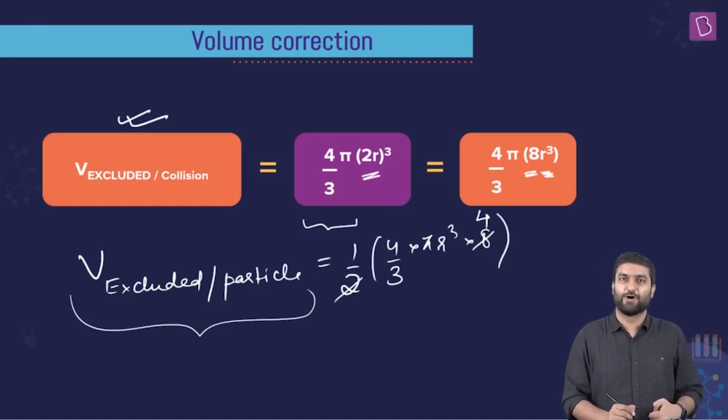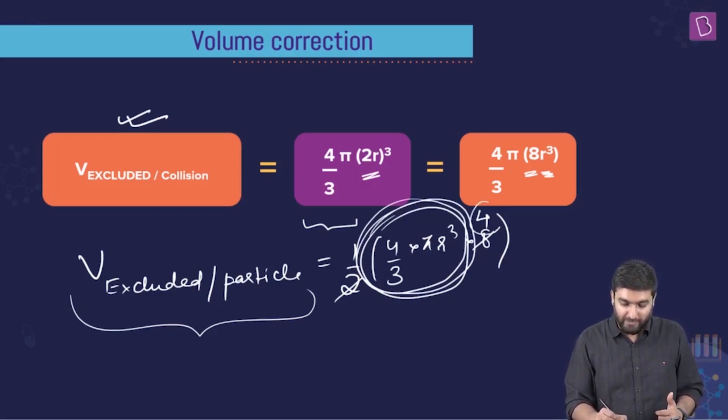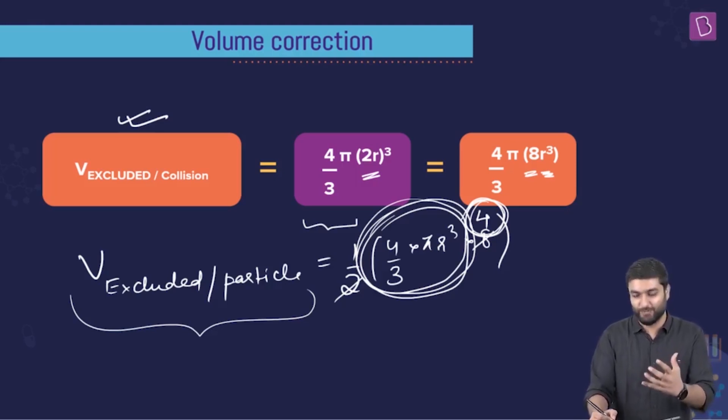Now think about it. We thought that the excluded volume would be the volume of the particles in total, the real particles, but turns out it is coming out to be four times. Think over here, four times the volume of one particle. Crazily interesting. That's what we need here, that's what astonishment and then actually thinking about and realizing, oh wow, that is the moment when I get a wow factor.